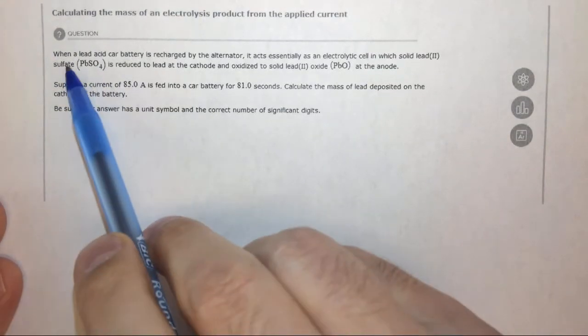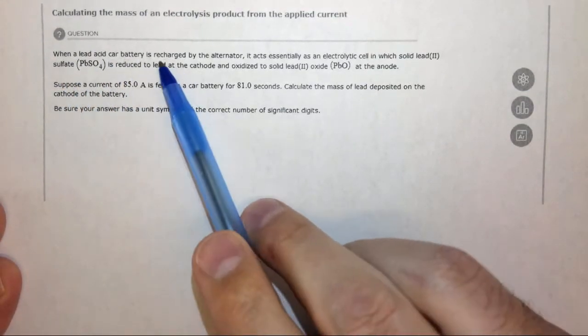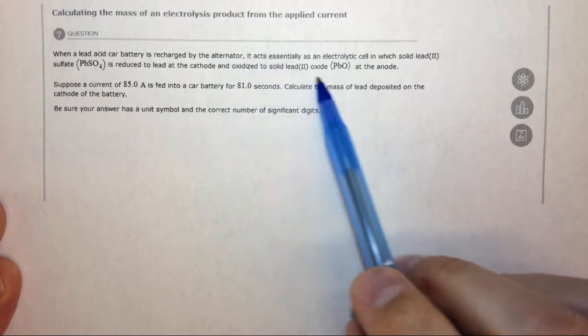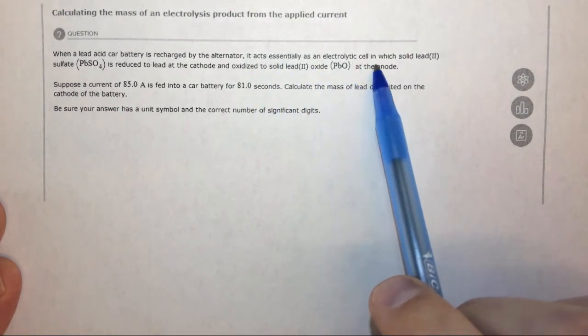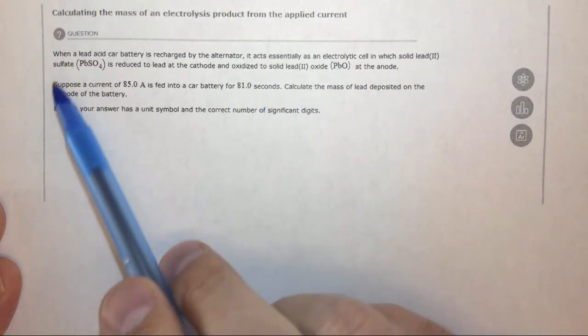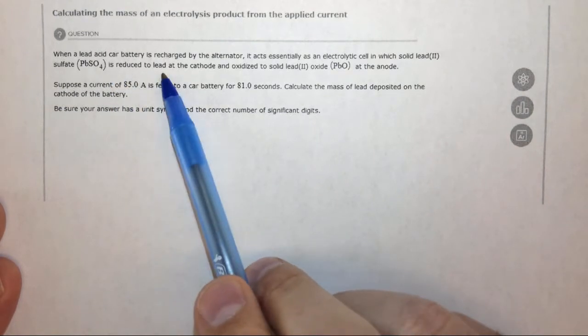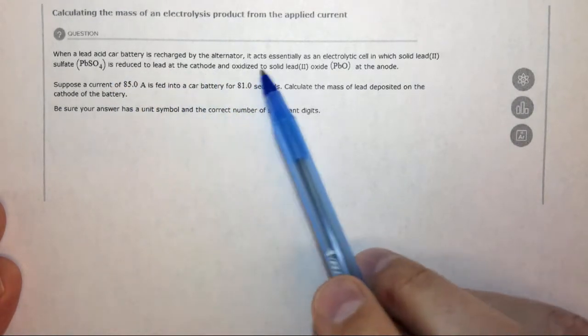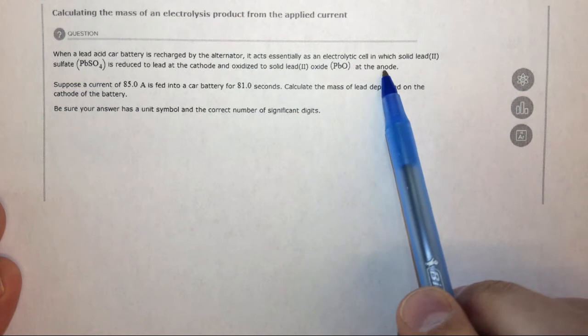This question says, when a lead acid car battery is recharged by the alternator, it acts essentially as an electrolytic cell in which solid lead 2 sulfate is reduced to lead at the cathode and oxidized to lead 2 oxide at the anode.